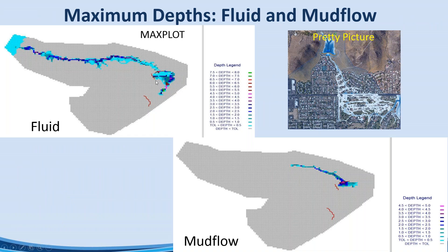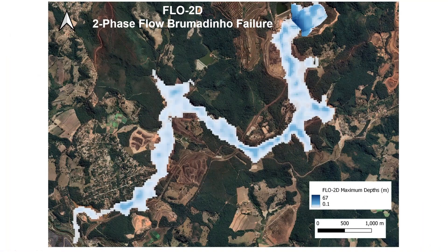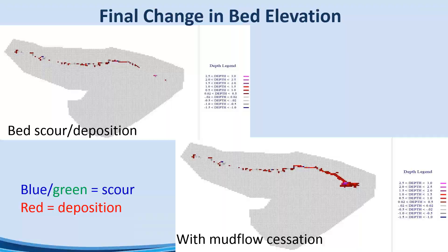For maximum depths, results can be plotted using a simple map-max plot routine or exported to a GIS package like QGIS. You can plot fluid inundation maximum depths alongside mudflow maximum depths — for example, showing where the mudflow ceased flowing downstream. Velocities can also be plotted. An example is shown for the Brumadinho tailings dam failure, displayed with QGIS graphics showing the grid element relationship, where various presentation options are available.